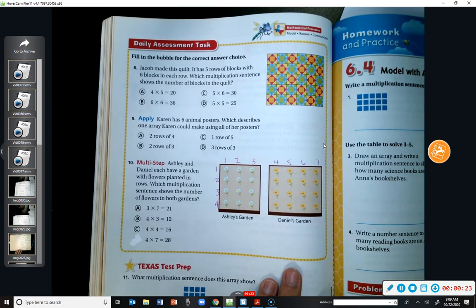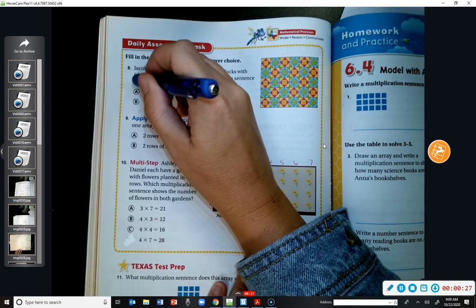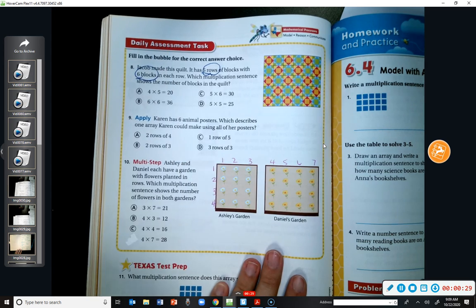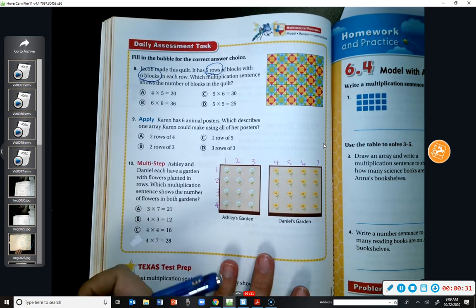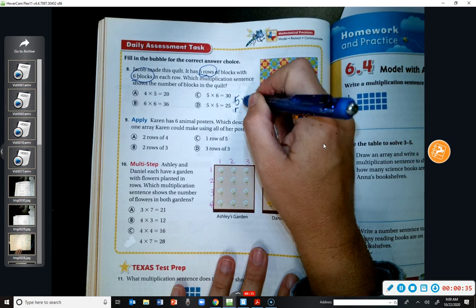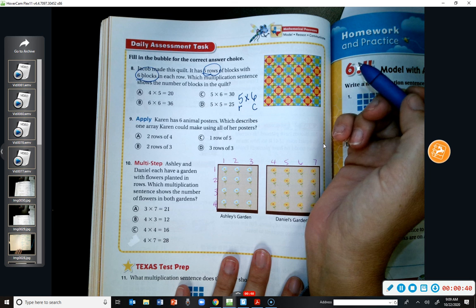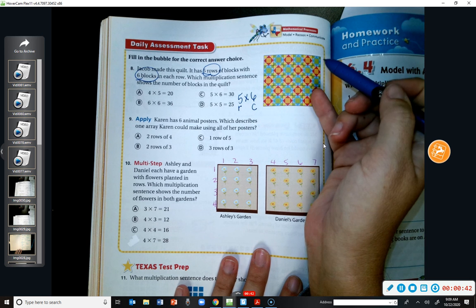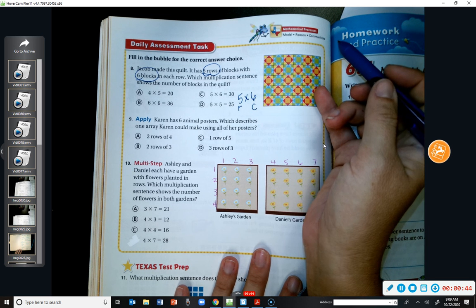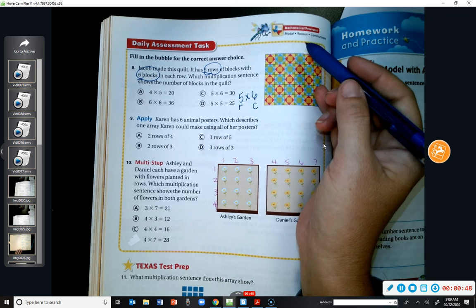Okay, so I have five rows, six blocks in each row. So I know my factors should be five, which is my rows, and six in each row. So five times six, the only answer choice that even has the correct numbers being used is what? C, right?